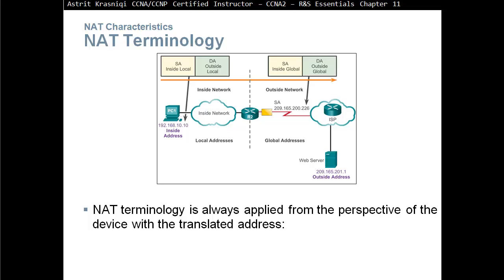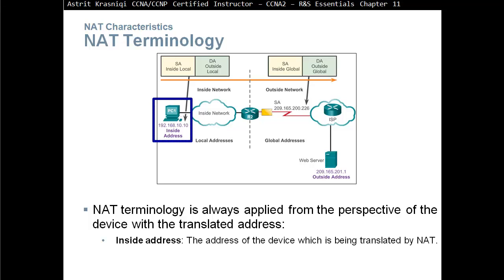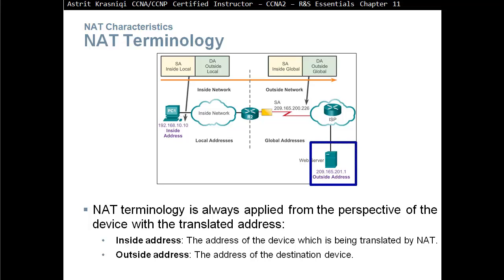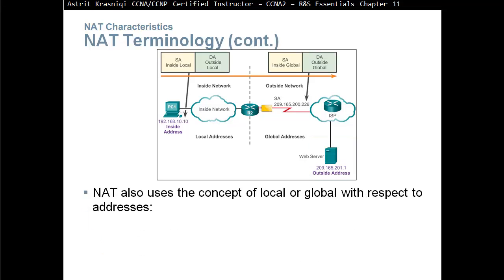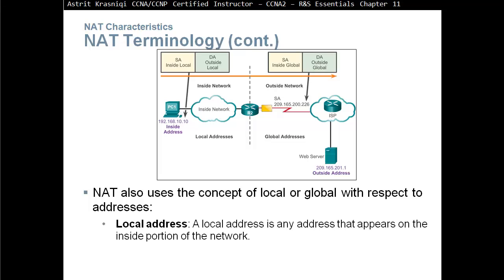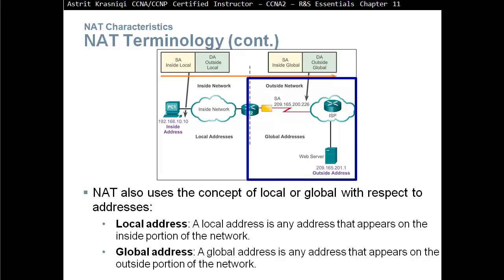NAT terminology is always implied from the perspective of the device with the translated address. Inside network refers to anything coming from our internal network — the addresses of the devices being translated by NAT. Outside address is the address of the destination device. So inside address is the address that will be translated, and outside address is the destination where you are going. NAT also uses the concept of local or global with respect to addresses. Local address is any address that appears on the inside portion of the network, and global address is any address that appears on the outside portion.